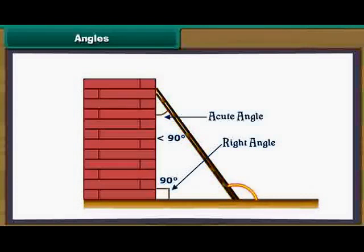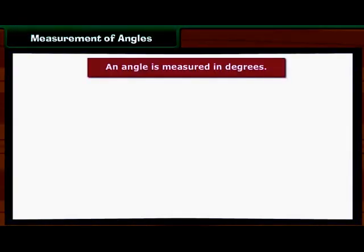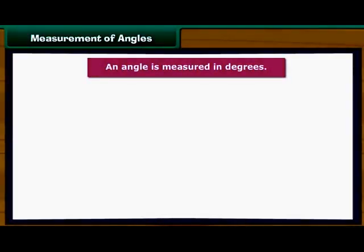Measurement of angles: An angle is measured in degrees. Let us now measure angles with two different instruments: a divider and a protractor. Look at this object. It is called the divider. We can use it to measure angles. Let us see how.